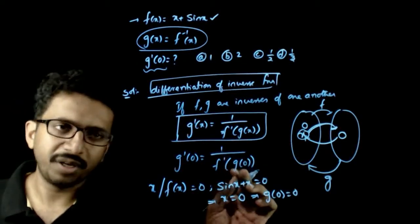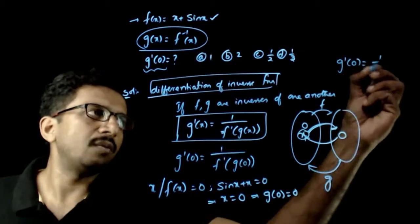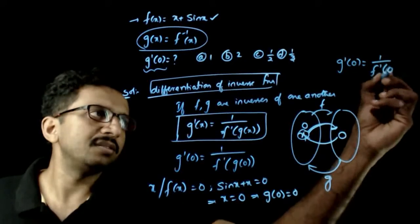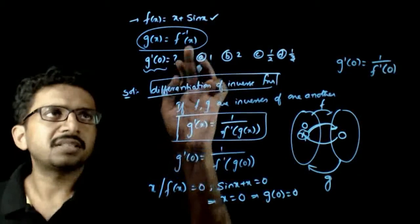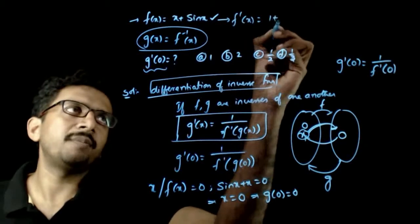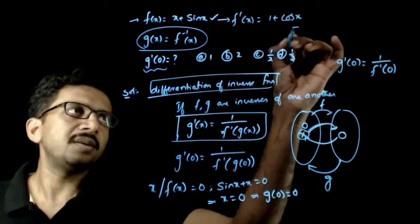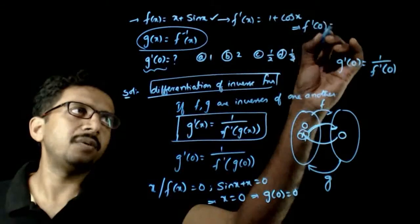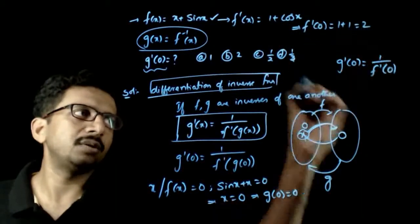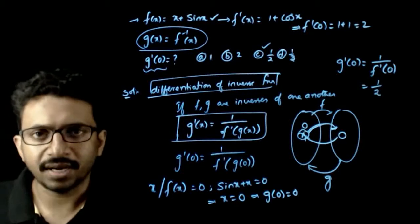Now substituting, g'(0) = 1 / f'(g(0)) = 1 / f'(0). Let us find f'(x): f'(x) = 1 + cos x. Therefore f'(0) = 1 + cos 0 = 1 + 1 = 2. So g'(0) = 1/2. Option C is the right answer.